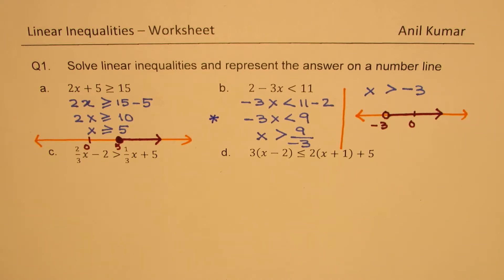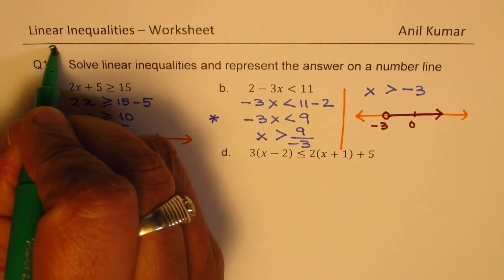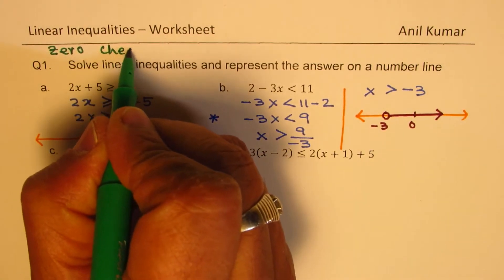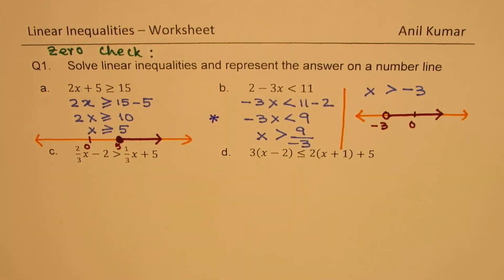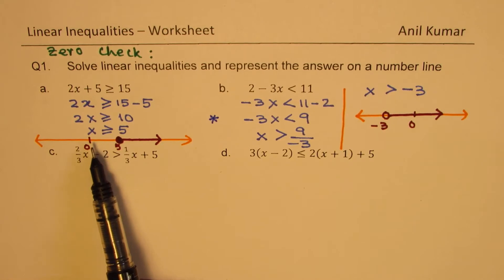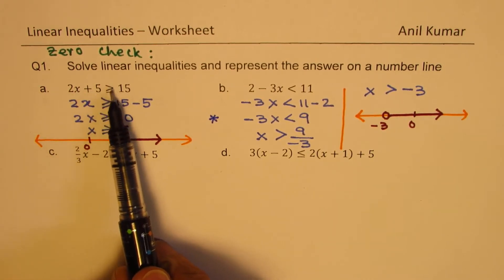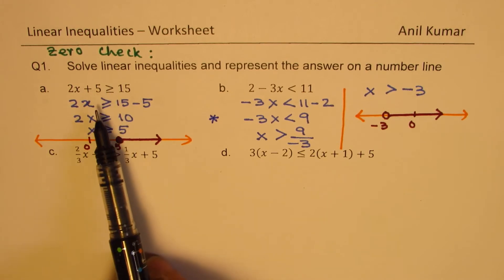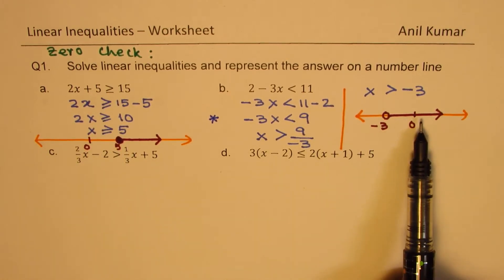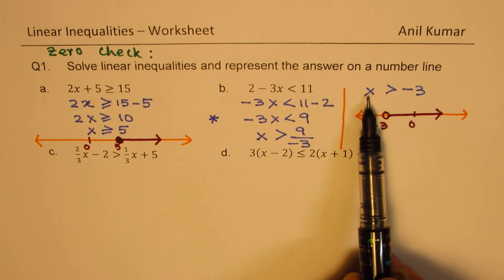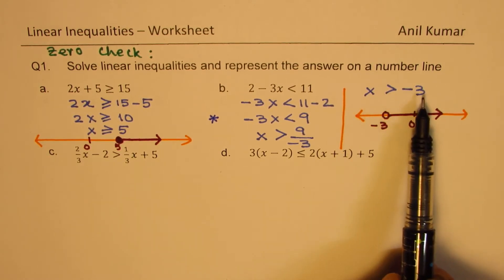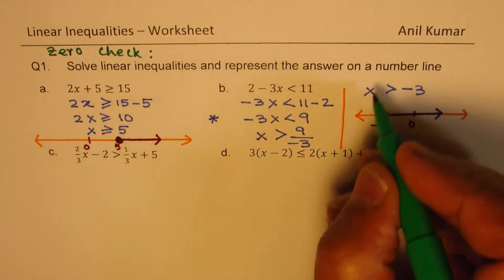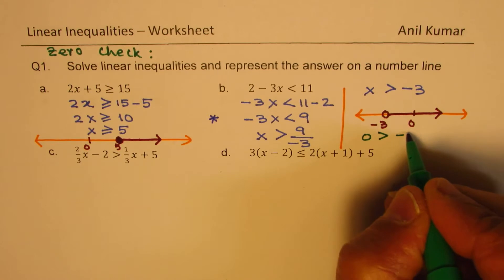At this point, I want to highlight the 0-check technique. In the first solution x≥5, if I substitute x=0, I get 5 is greater than or equal to 15, which is false — confirming 0 is not in the solution set. For the second inequality x>-3, substituting x=0 gives 0 is greater than minus 3, which is true, confirming 0 is part of that solution.